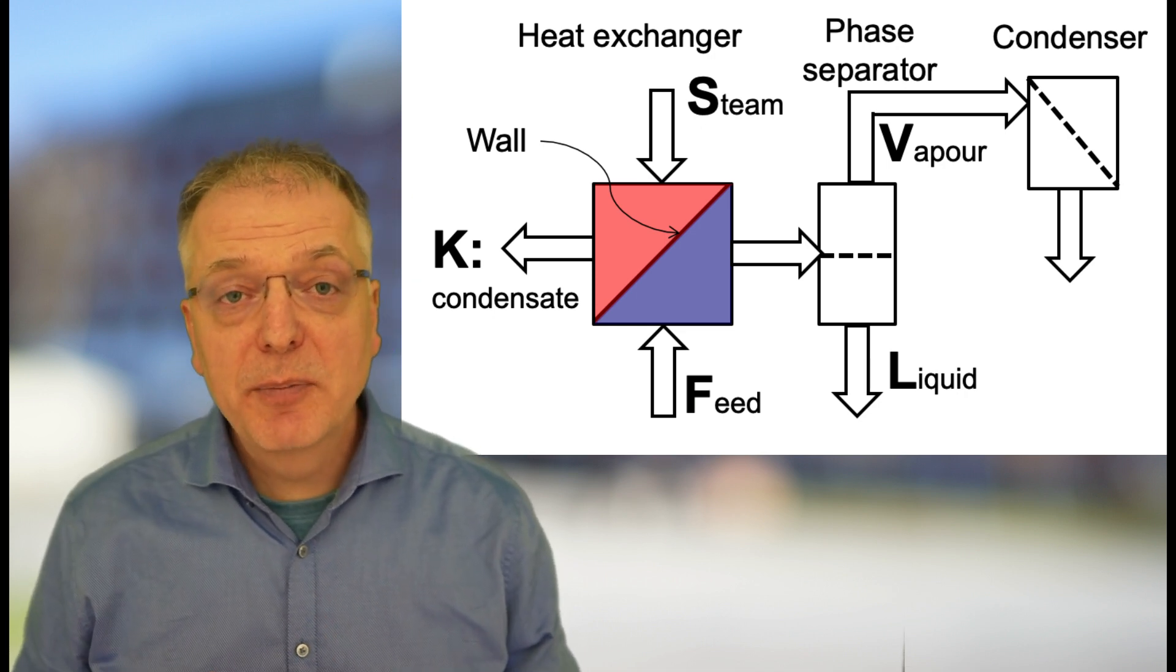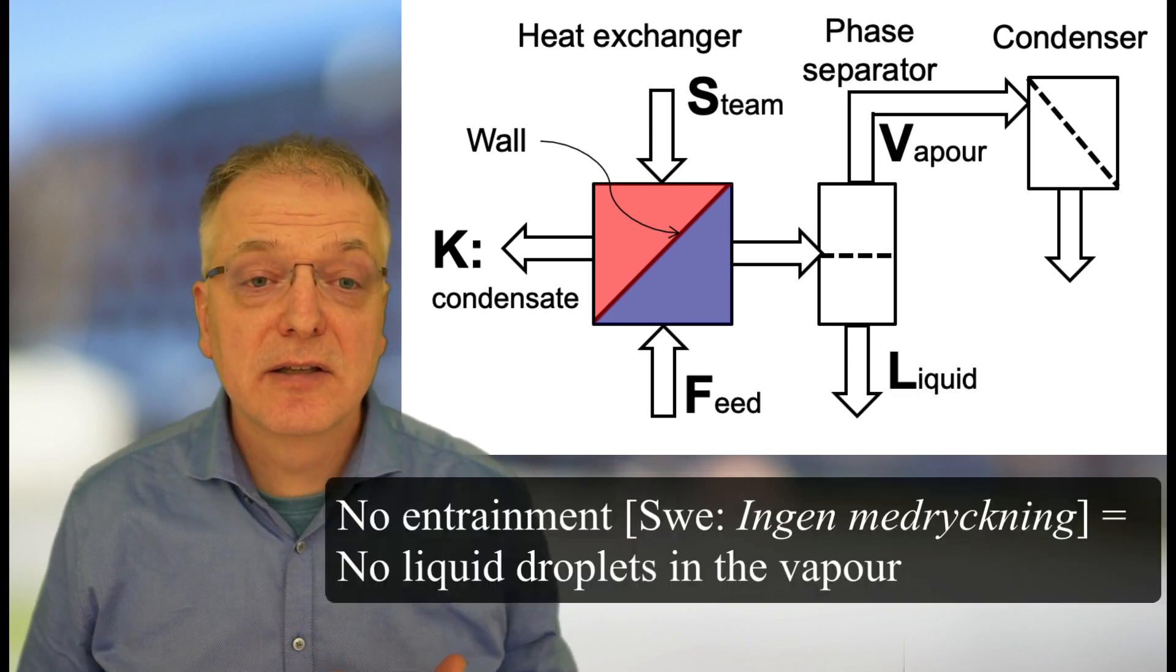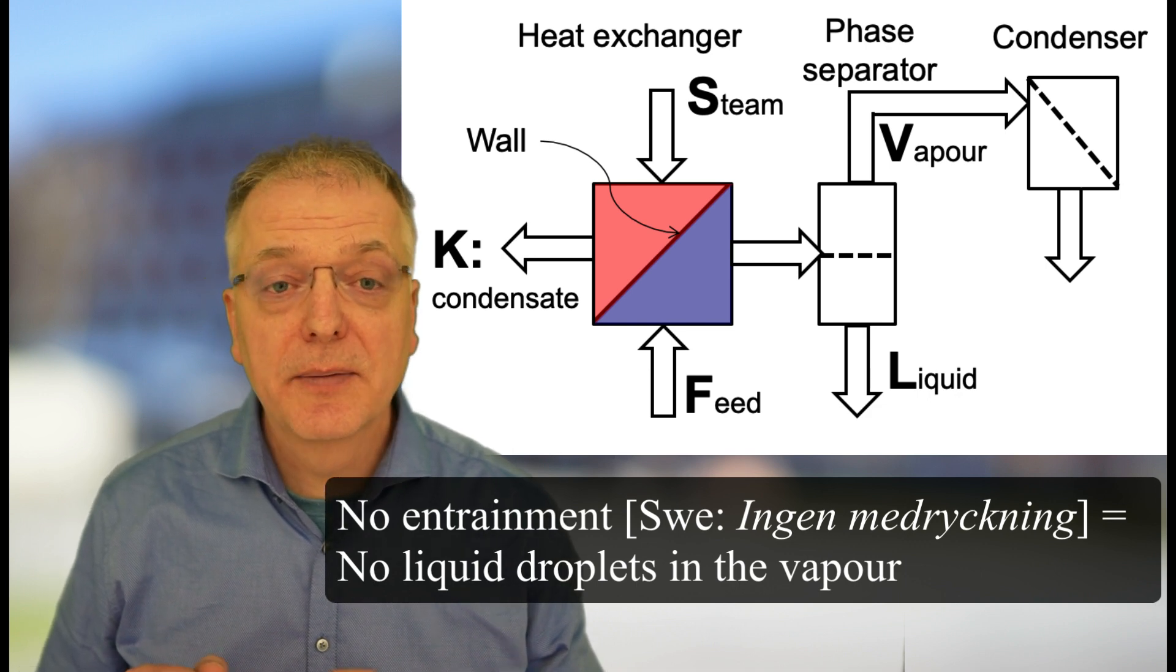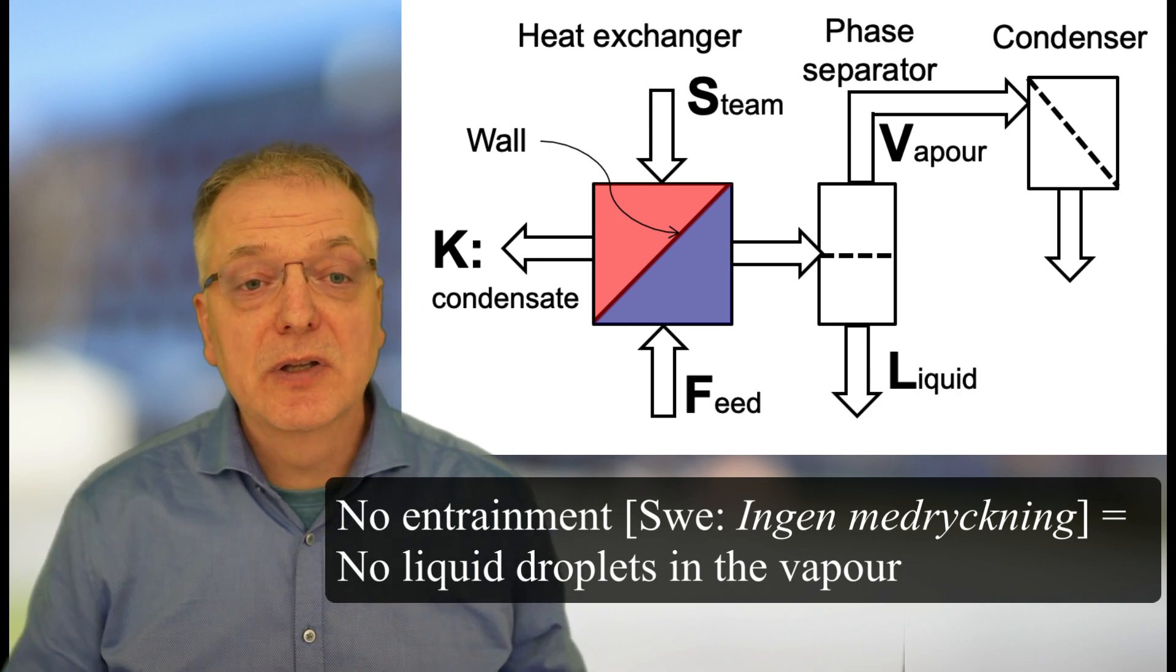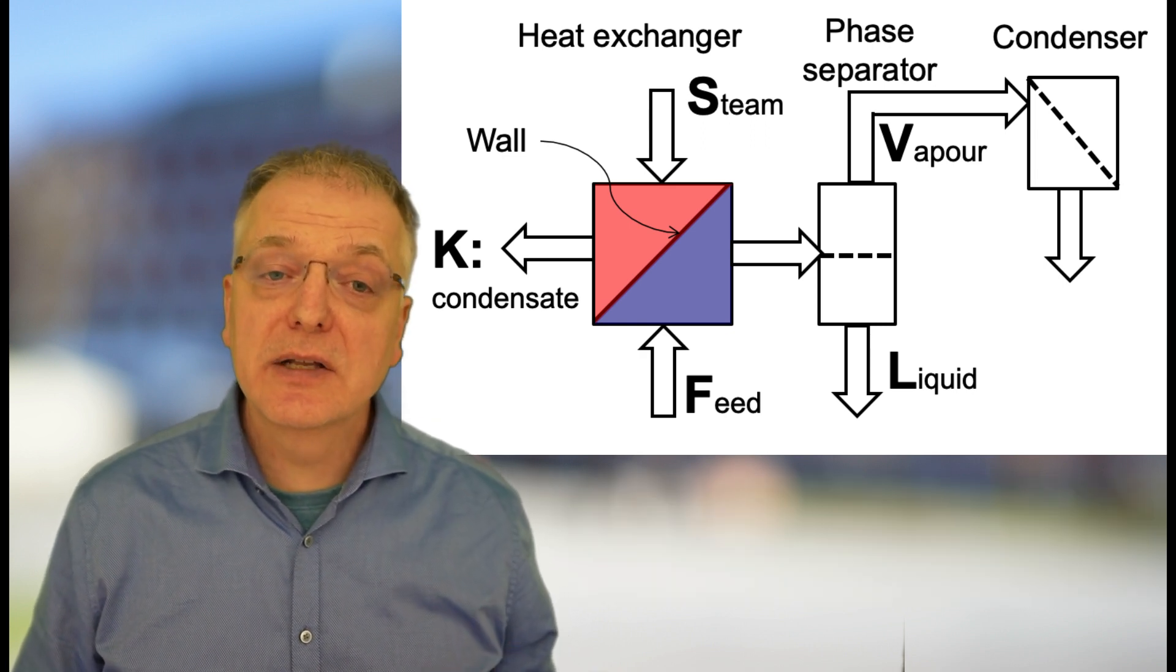Ideally, the vapor should be totally free of liquid droplets. Another way to say that is that there should be no entrainment, in Swedish ingen medryckning, of droplets up into the vapor flow. After the phase separator, the vapor condenses in the condenser.